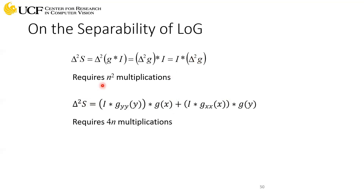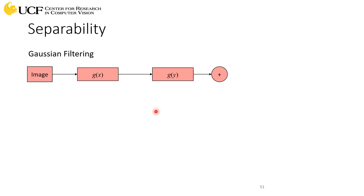The 2D kernel would require N² multiplications, but since all these kernels are one-dimensional, it's just 4N — saving a lot of computation. Looking at the complete edge detection algorithm: you take your image, compute Gaussian filtering in the x direction and Gaussian filtering in the y direction. That gives you the Gaussian-filtered image — that was the separability of Gaussian filtering.